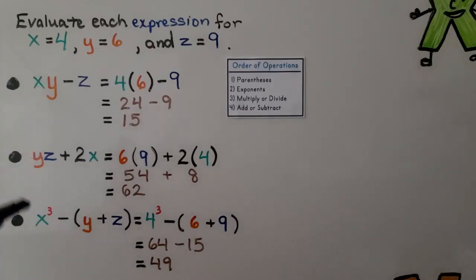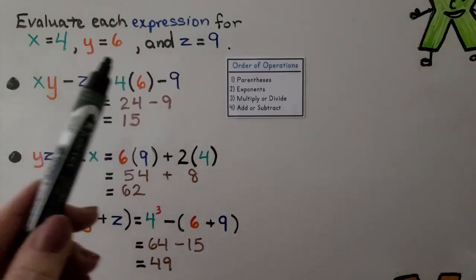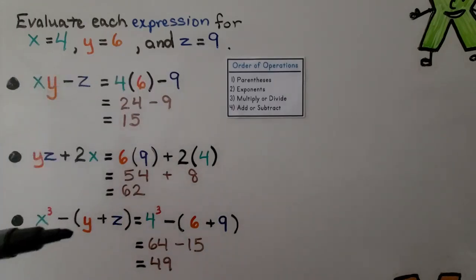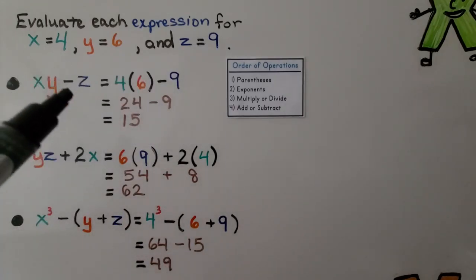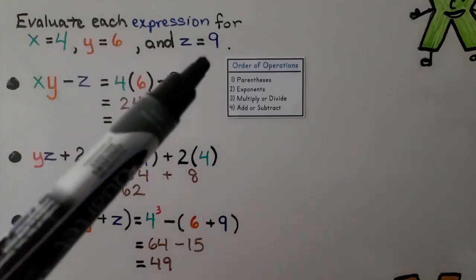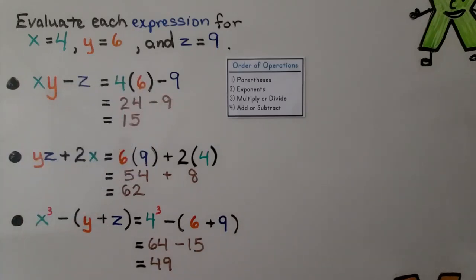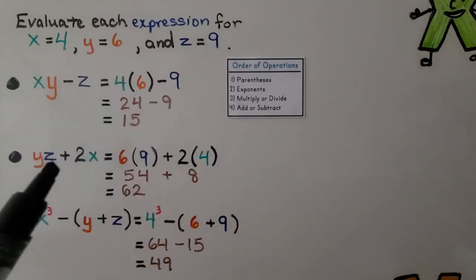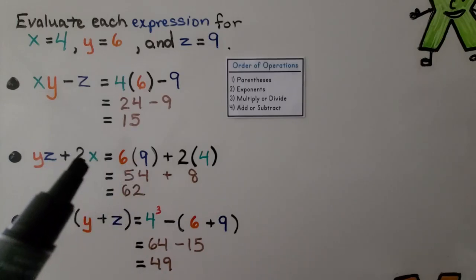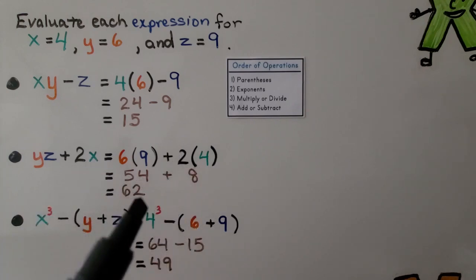Here we have three different algebraic expressions, each evaluated for x equal to 4, y equal to 6, and z equal to 9. For the first expression, x times (y minus z): we do 4 times (6 minus 9)... substituting in, 4 times 6 is 24, and 24 minus 9 equals 15. For the second expression, yz plus 2x: 6 times 9 is 54, plus 2 times 4 is 8, so 54 plus 8 equals 62.